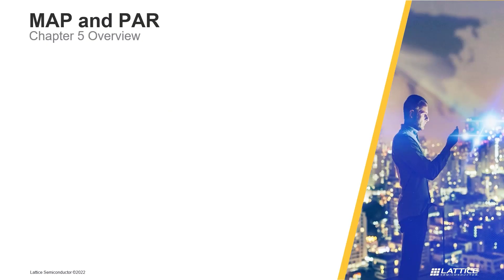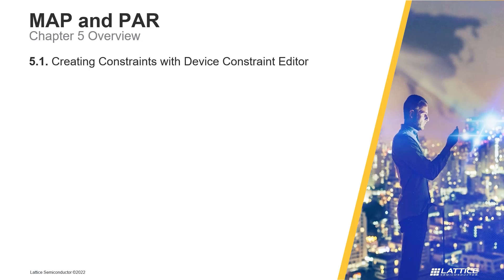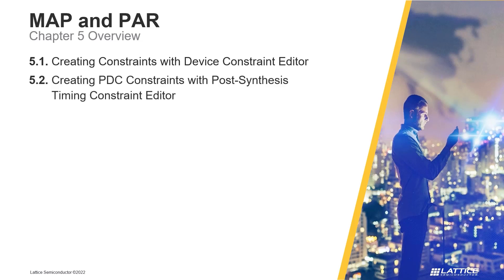Chapter 5 consists of seven sections. In the first section, creating constraints with device constraint editor, we will introduce Radiant's device constraint editor and how it can be used to create physical constraints for a project's device. In section 2, creating PTC constraints with post-synthesis timing constraint editor, Radiant's post-synthesis timing constraint editor is introduced and how it can be used to create timing constraints after synthesis. In section 3, using physical designer, we will discuss Radiant's physical designer and what it can be used for.